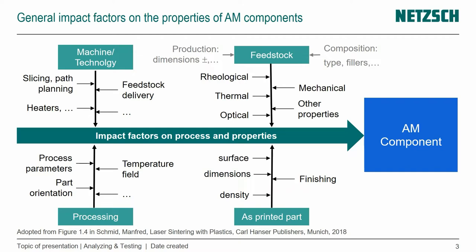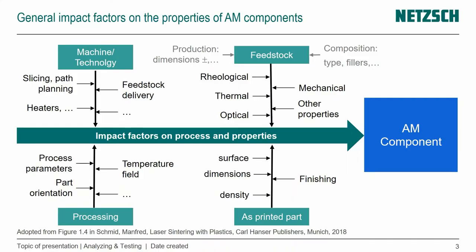For the feedstock, we also have other impact factors. In production, very critical are the dimensions — the tolerance. We're talking about filament that's being fed, and we're feeding with a constant feed rate. But if our filament has deviations in the diameter or has voids inside, then for the same amount of length of filament, we're actually getting more or less material fed into our print head, and that has an effect. Also the composition of the feedstock — what type of plastic, if we have fillers — all of that has an effect on the rheological, thermal, optical, mechanical, and other properties.